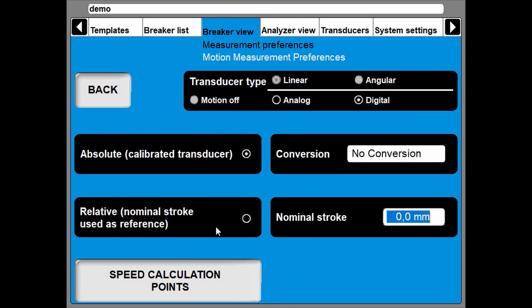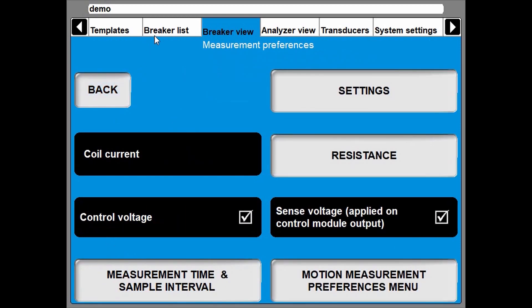I want to use relative because I don't know the details more than the stroke. So I fill in the stroke in millimeters. And the speed calculation points are used for standard settings. Now I'm prepared.